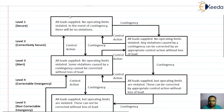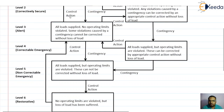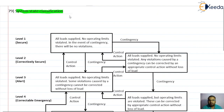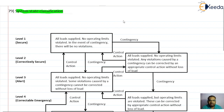In total we have six states in which the power system can operate. This system state classification was suggested in order to define the relevant energy management system function. The energy management system, or EMS, is nothing but the load dispatch center.